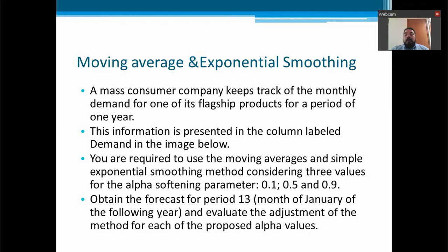You are required to use the moving average and simple exponential smoothing method, considering three values of alpha smoothing parameter. And these are 0.1, 0.5, and 0.9. And we are going to obtain the forecast for the month of January of the following year and evaluate the adjustment of the method for each of the proposed alpha values.